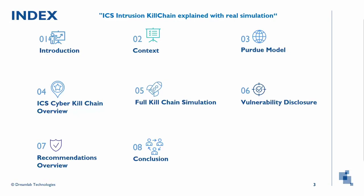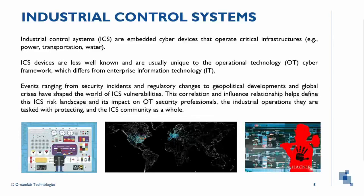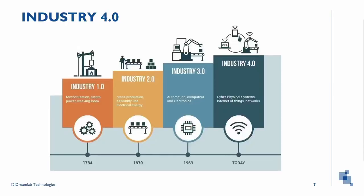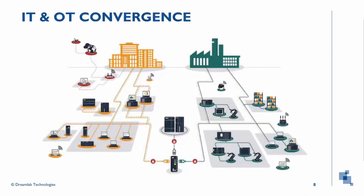We discuss how vulnerabilities are applied in the ICS cyber kill chain. ICS are devices that generally operate in critical infrastructures. These are not well known since they operate in a different environment compared with companies that have common information technologies. Many incidents involving ICS devices and the OT environment have had very important geopolitical connotations. Today we are in what is called Industry 4.0, characterized by broad interconnectivity, data collection, analysis, and communication, which results in optimization of flow and quality processes. This convergence between the IT and OT worlds increases the attack surface.